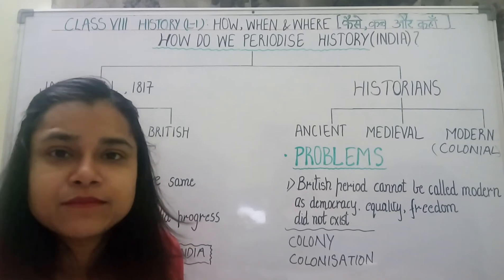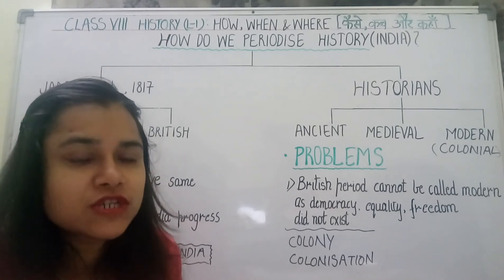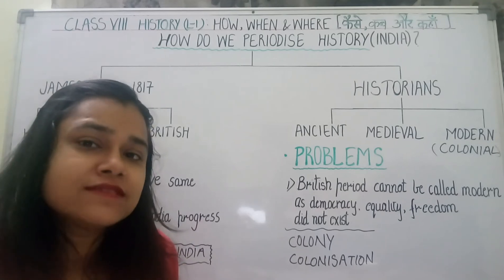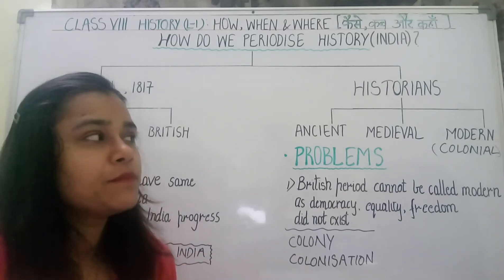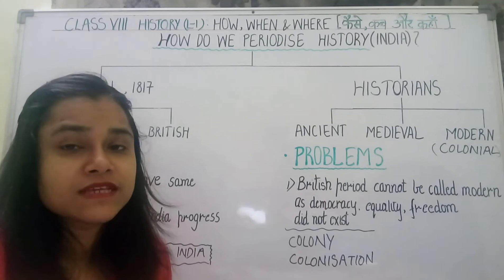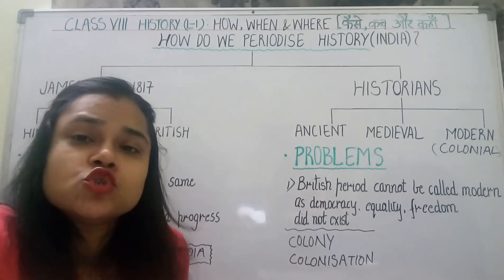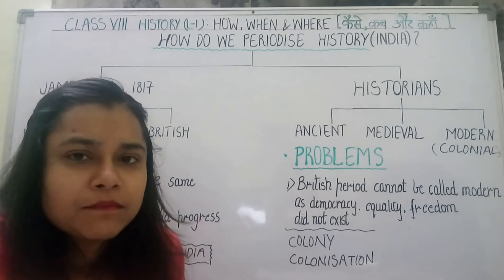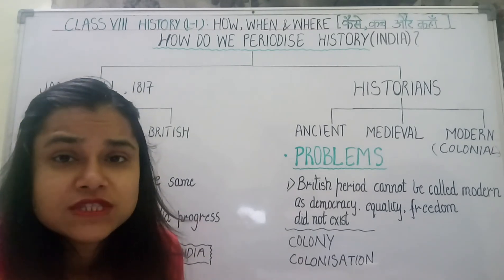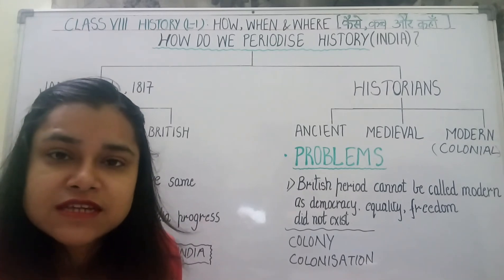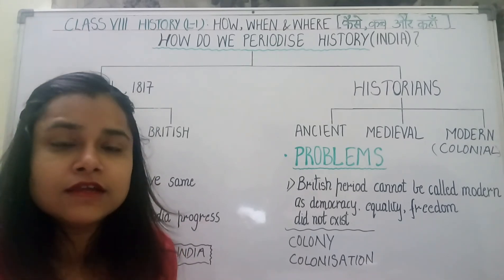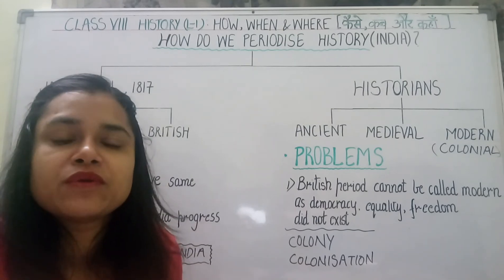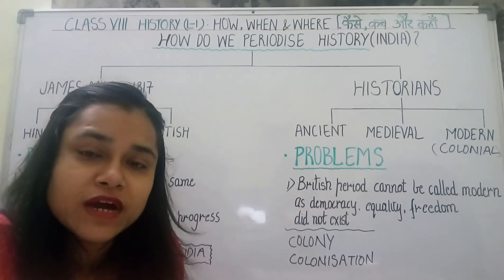Jiske andar hum entirely British rule ke baare mein padhenge — jab British India mein aaye aur unhone humpe raaj karna shuru kiya. So that time period is referred to as Modern History. Magar ab is classification mein bhi kuch problems hain. Jo historians ne British period ko Modern period ka naam diya — toh kya hum maan sakte hain ki modernization siraf British period mein hui? Balki Ancient India mein bhi logon ne progress kiya, nai nai cheezein develop huin. Medieval India mein bhi progress hua. So siraf Modern British period ko hi kyun kaha jaye?